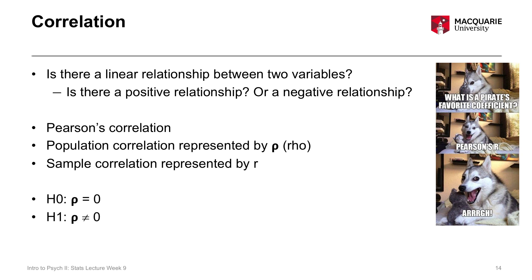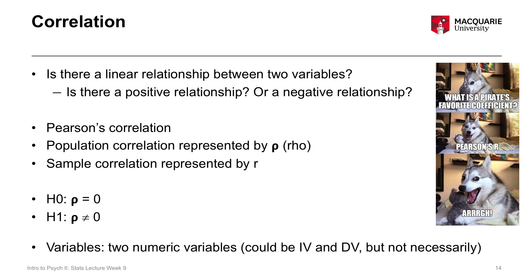The alternate hypothesis is that the population correlation is not equal to zero — it could be positive or negative, but it's something other than zero. The variables in a Pearson's correlation must be exactly two numeric variables. You can have an IV and a DV, but you don't have to — it's perfectly valid to just look at whether two variables are associated.